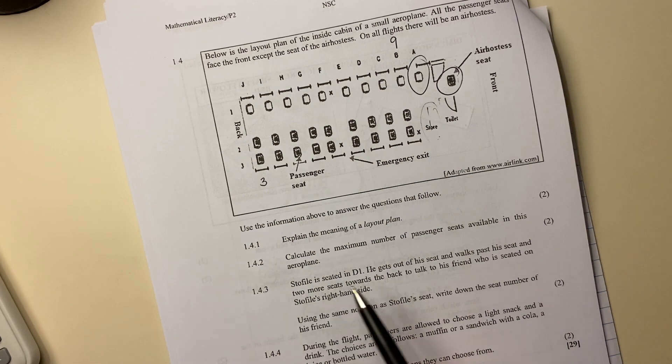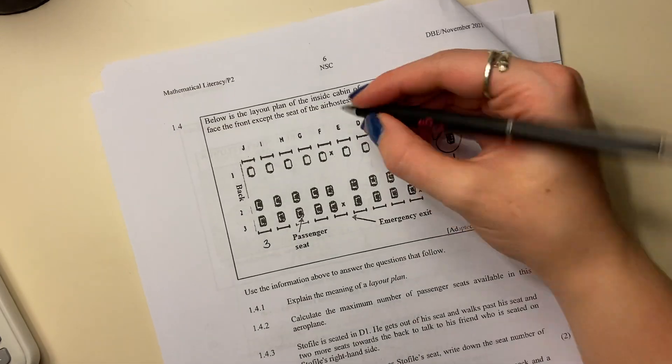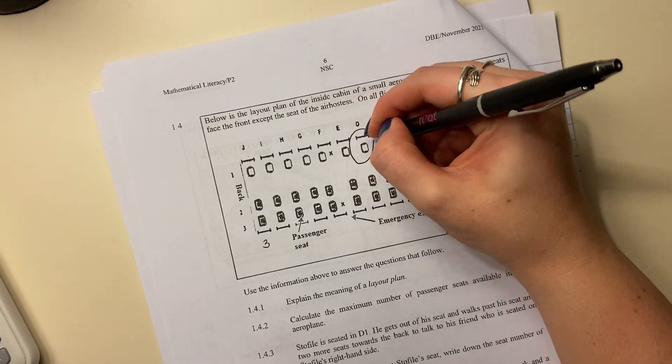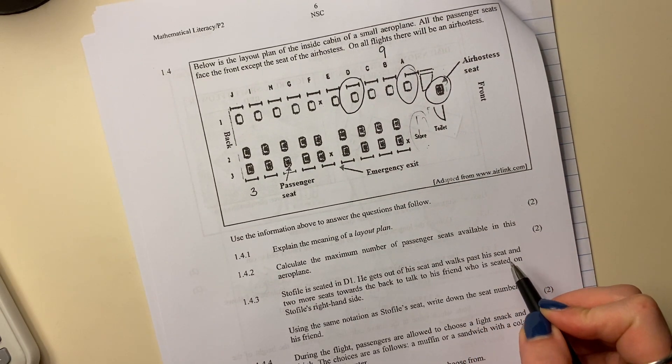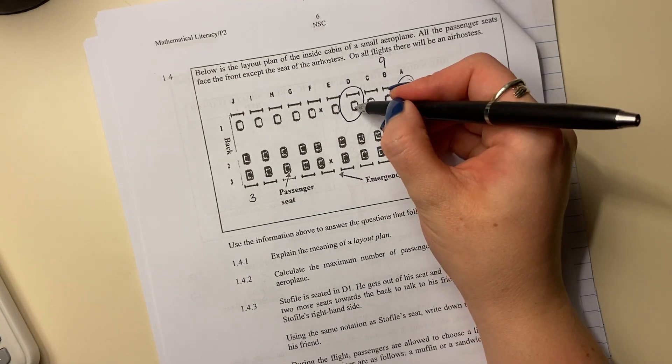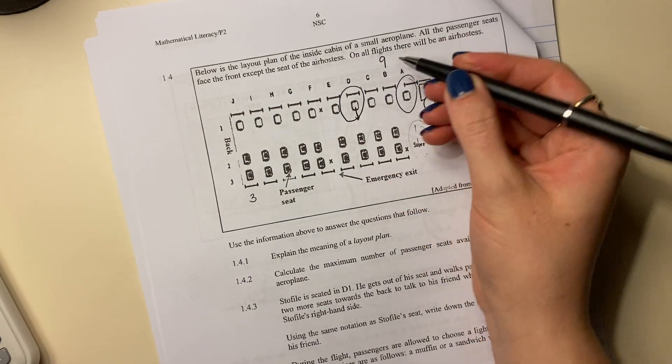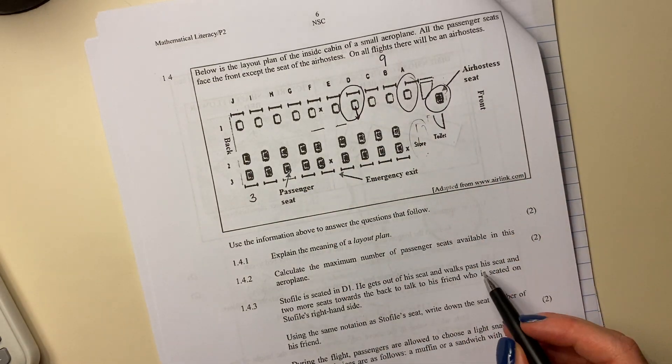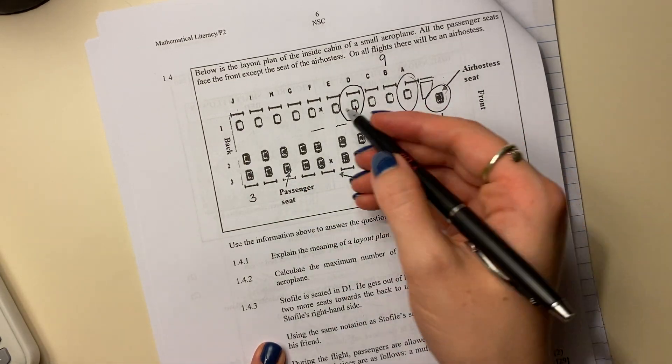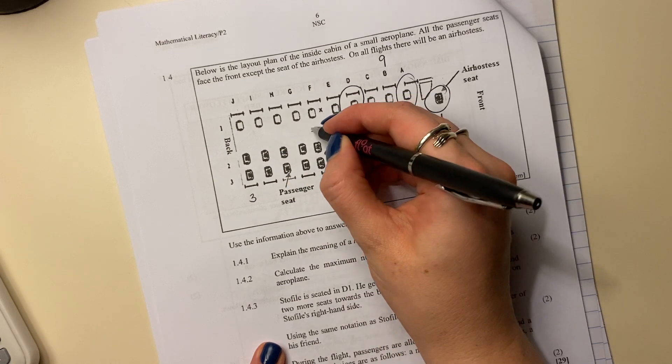Let's look at the next question. Stoffele is seated in D1, so my guy is over here. He gets out of his seat and walks past his seat and two more seats. Hopefully there was no turbulence. And he walks past two seats, so he walks past these two seats because it says he's towards the back. So that is the back, so he's walking in this direction.